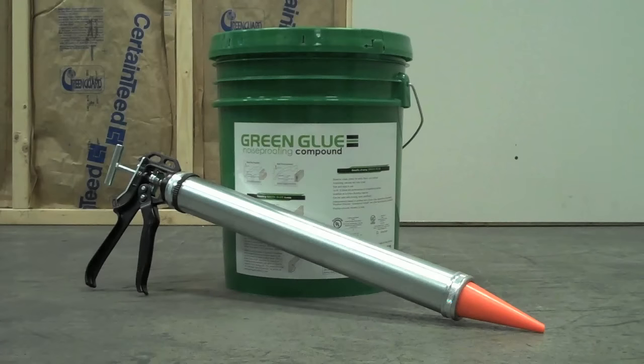The Green Glue 5 Gallon Pail is recommended for large jobs measuring 365 square feet or more. The following video will provide instruction on how to apply the noise proofing compound from the pail with our easy to use and cleanable pail applicator tool.